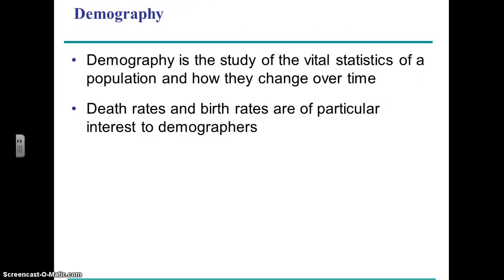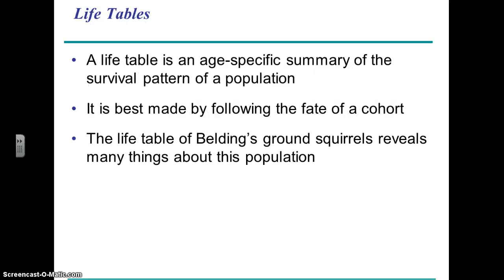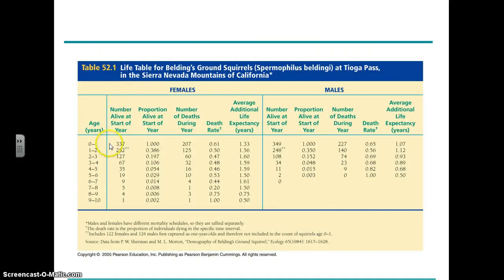Demography is the study of population dynamics — birth rates, death rates, and fertility rates. Basically, the factors that determine whether a population is growing, shrinking, or staying the same. We can use life tables to study demographics, which show for a given species the different age groups, the mortality rate at each age, where most of the mortality is occurring, and what their lifespan is.